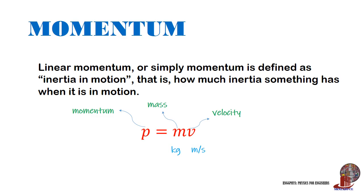Because velocity is a vector quantity and mass is scalar, momentum is considered a vector quantity too. So the x-component of momentum can be solved by multiplying mass times its velocity in the x direction. Following the same concept, momentum of y equals m times v of y, and p of z equals m times v of z.